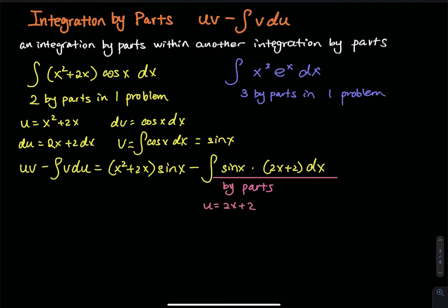But if there is an x in front of the sine, then that would be a problem, so therefore that is another integration by parts. How do I modify the original problem to have only one integration by part? All you have to do is remove the square. The reason we have two by parts in one problem is because of this square — when you take the derivative of that, it gives you 2x, and that 2x is what caused another integration by part.